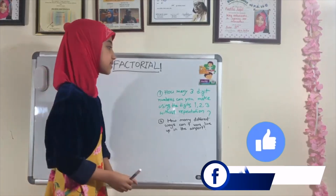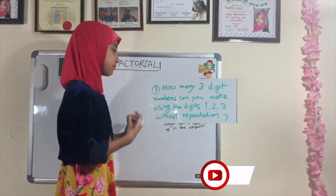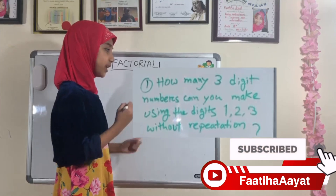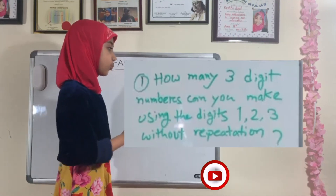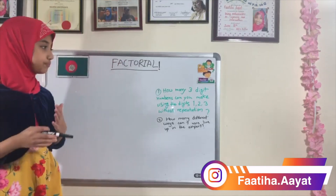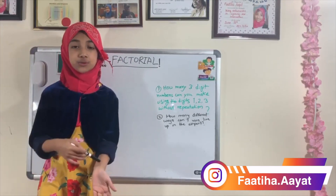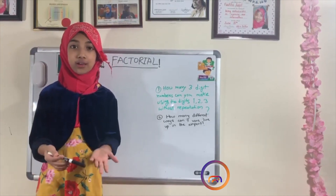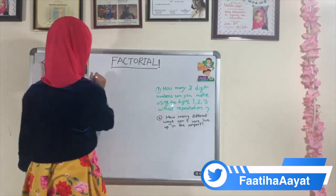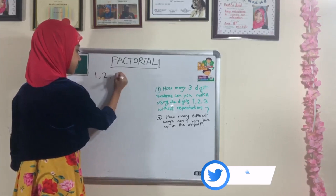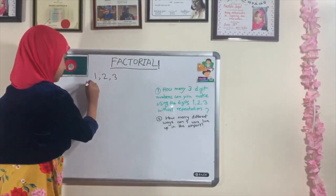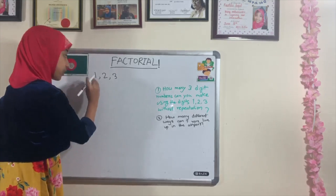The question says: how many three-digit numbers can you make using the digits 1, 2, and 3 without repetition? The normal way we would do this is draw a diagram. We already know that the digits are 1, 2, and 3.